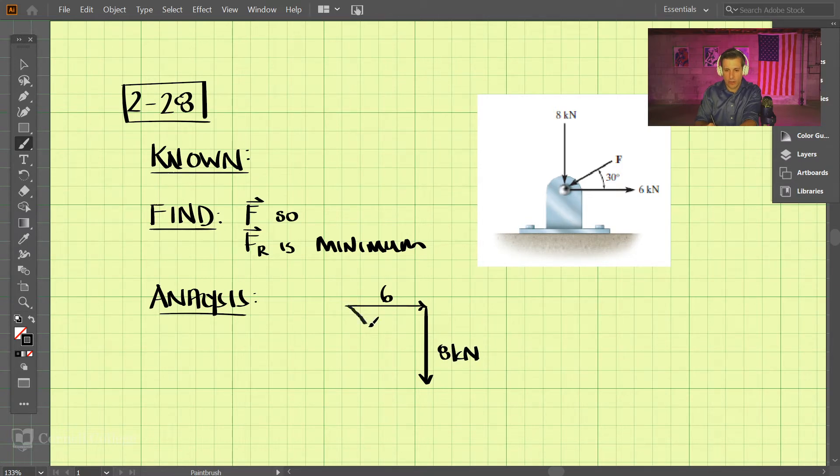Then we're going to get the resultant vector of those two added together. That's going to be this, and we can call it anything we want. We'll call it F prime here, and this angle theta.